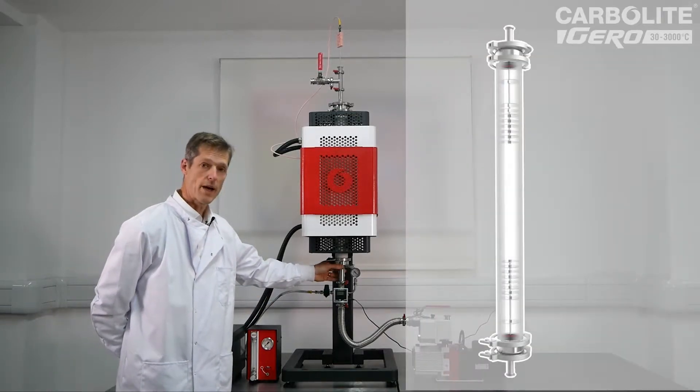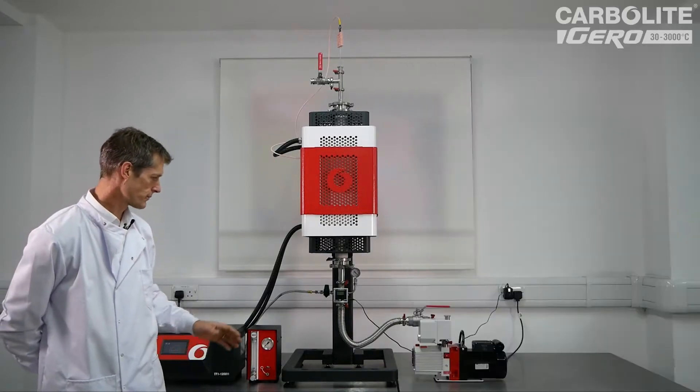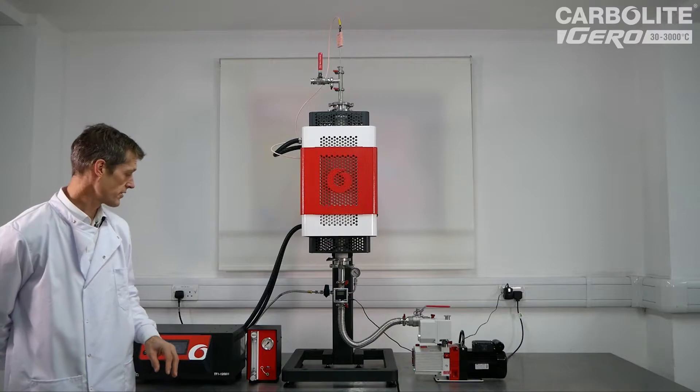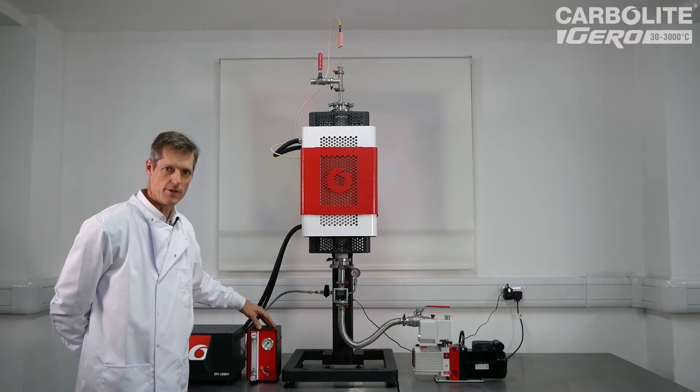It comes with a work tube package and this one is set up for vacuum atmosphere. To achieve that we can supply this vacuum pump system that also comes with an inert gas inlet for inert gas atmosphere.